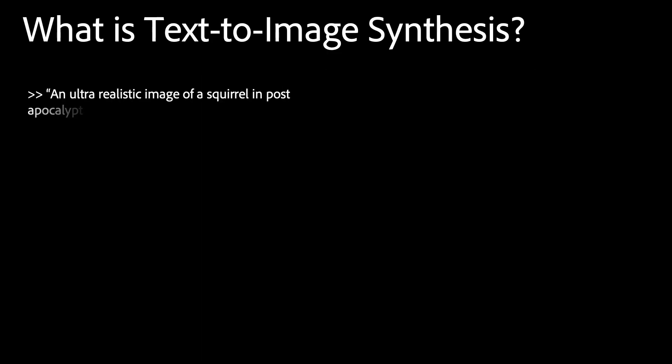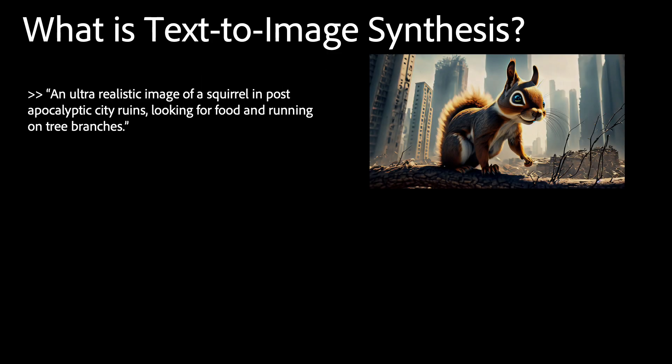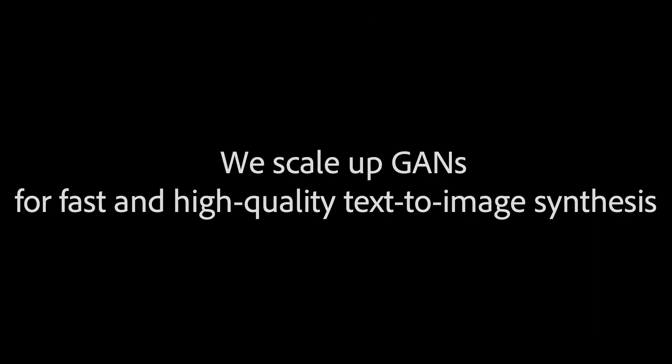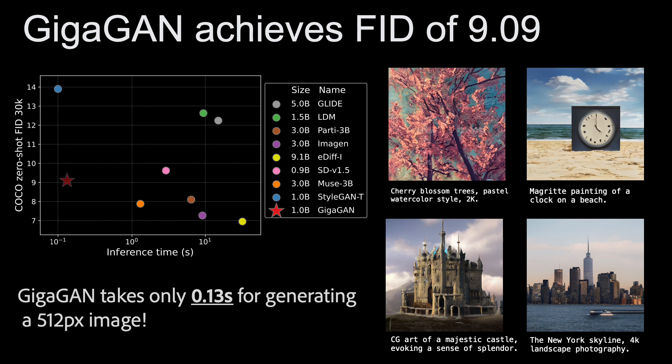Text-to-image has recently become quite popular. For example, large-scale diffusion models are able to synthesize realistic images given a text prompt. In this study, we aim to achieve the same capability with a GAN model and present GigaGAN, the first 1 billion parameter GAN for fast and high-quality text-to-image synthesis. Here we show that our FID is comparative with diffusion and autoregressive models, while being much faster without an iterative sampling step for inference.